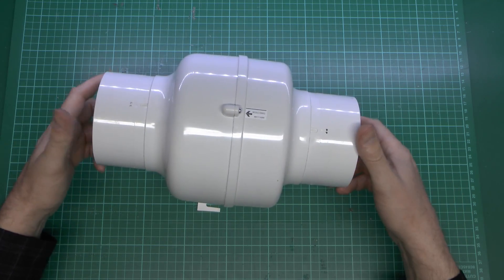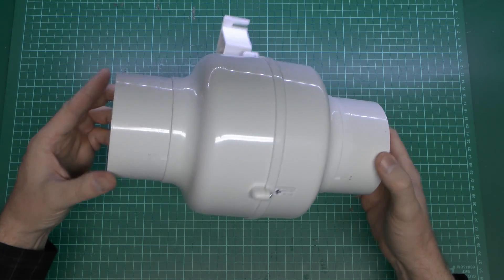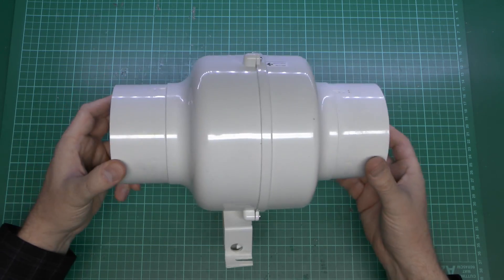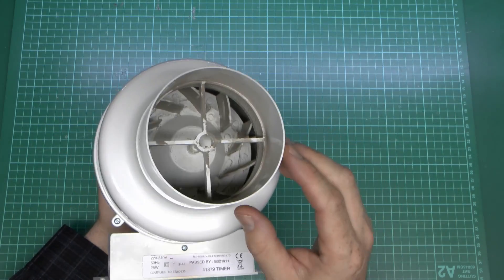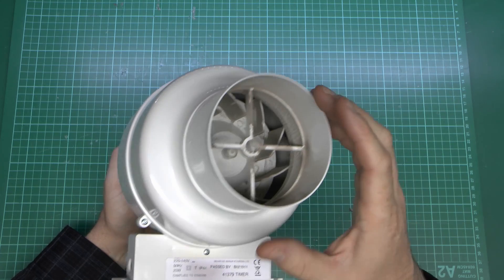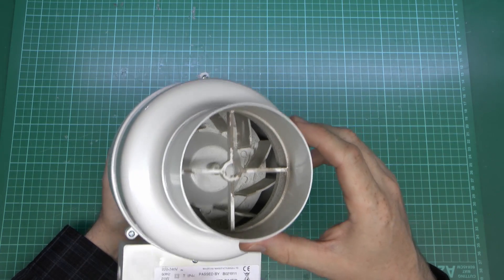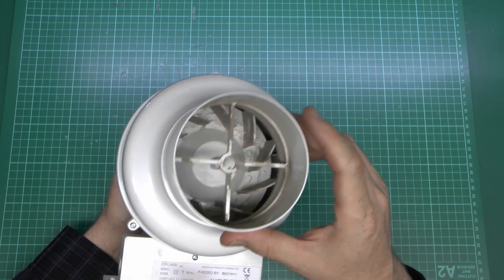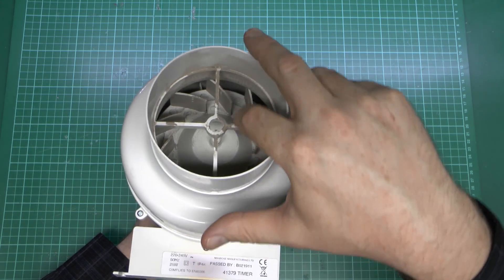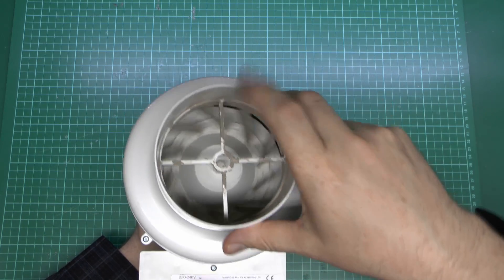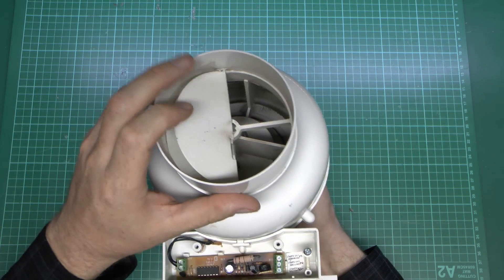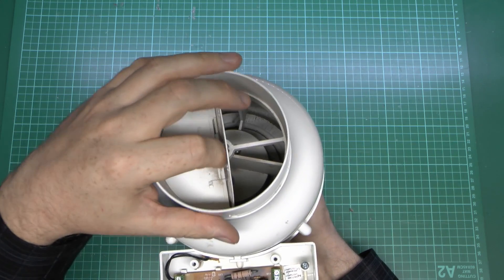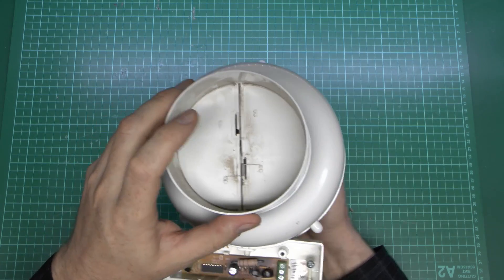So here's the fan in question. This is a fairly old one. It's been in for a number of years and was removed because it doesn't work anymore. And it's fairly straightforward. You've got two outlets here. These are 100mm, all designed to fit into 100mm ducting, as that flexible stuff we saw before. And we can see the actual blades in there, which of course rotate. This is the inlet. And the outlet, again, same size.